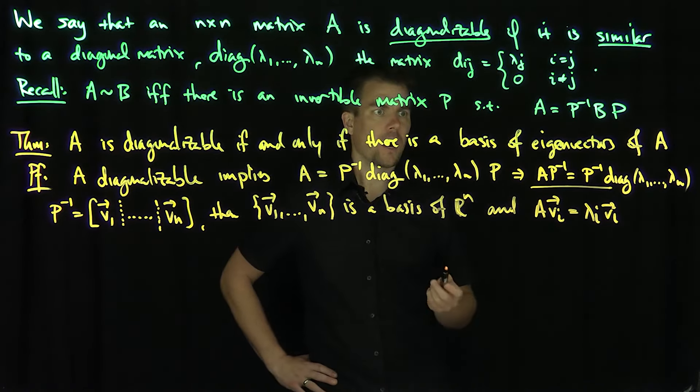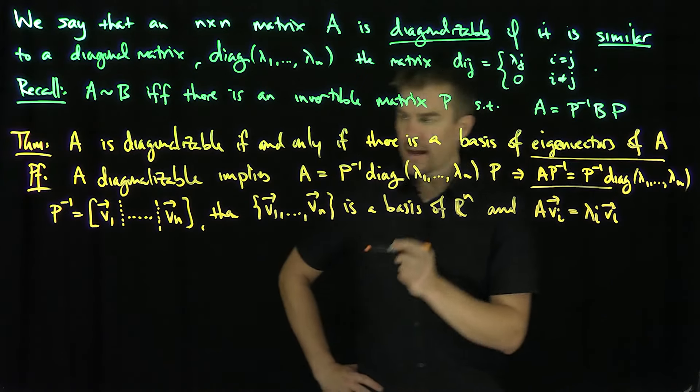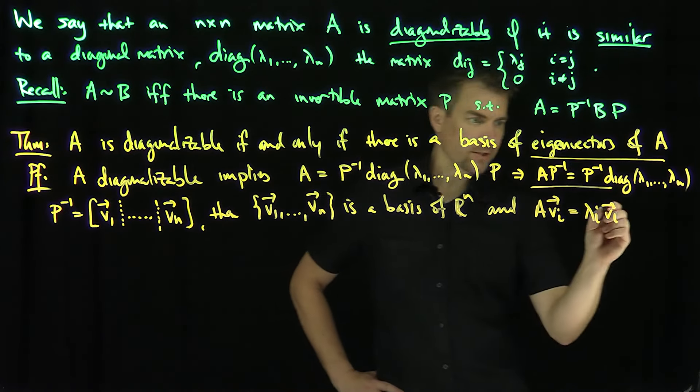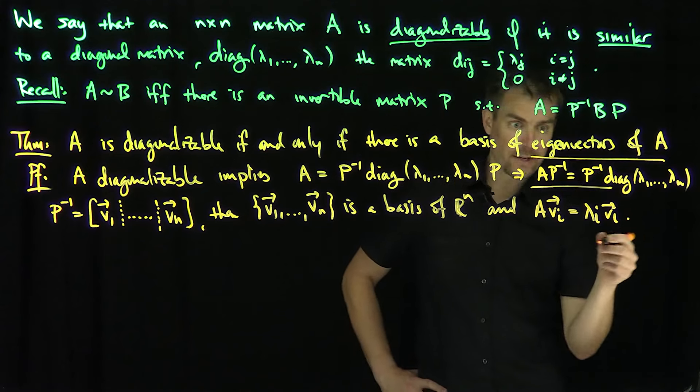A times vᵢ equals λᵢvᵢ. In other words, this vᵢ is an eigenvector of A, and so the eigenvectors of A form a basis. So in other words, if you're diagonalizable, then your eigenvectors form a basis.